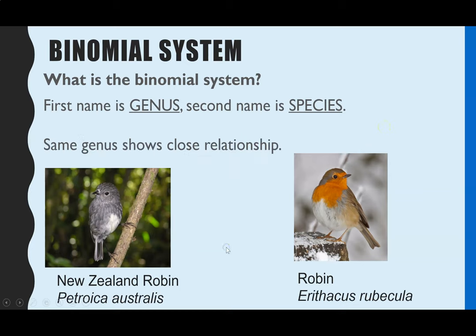We've got some examples here. We've got the New Zealand robin, which is the common name we use in English, and then its binomial name. Petroica is the genus and australis is the species. For the robin, Erithacus is the genus and rubecula is the species. Conventionally, the binomial name is always presented in italics, the genus gets a capital letter, and the species does not.